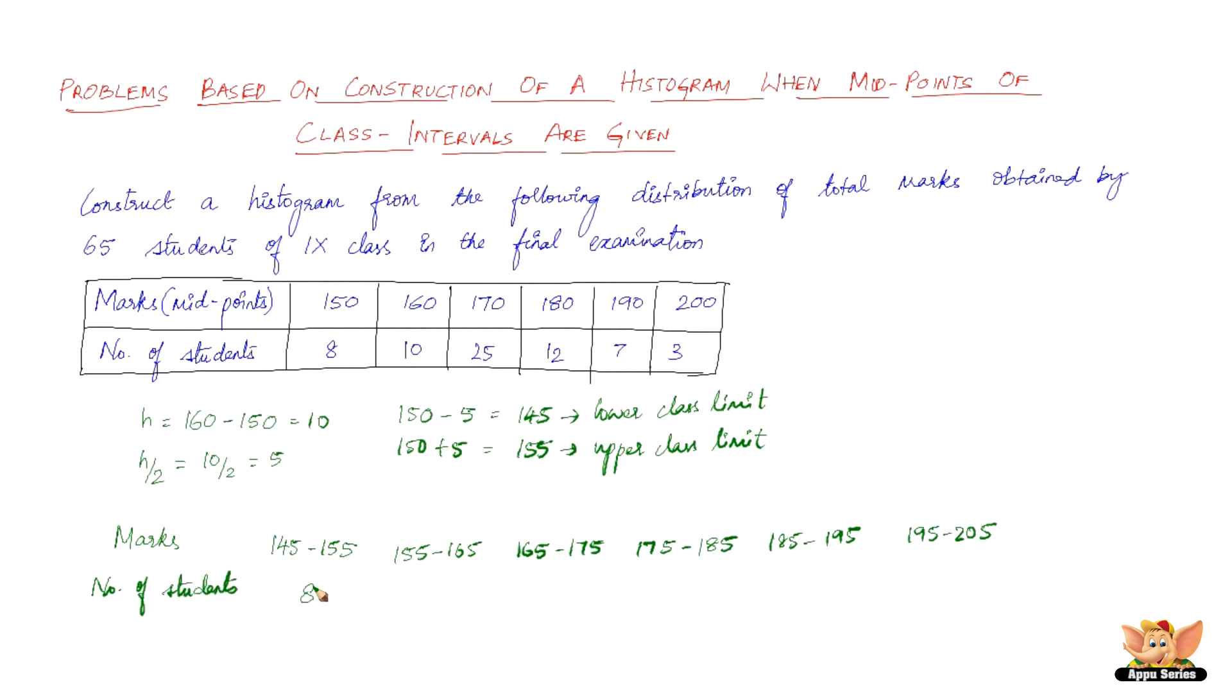is given as 8, 10, 25, 12, 7, and 3, which doesn't change at all. There's no reason for that to change. So here we have the new data.